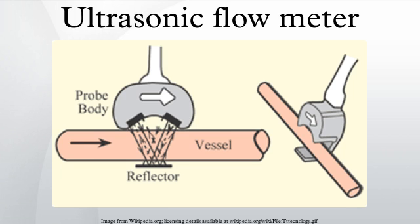Using ultrasonic transducers, the flow meter can measure the average velocity along the path of an emitted beam of ultrasound by averaging the difference in measured transit time between the pulses of ultrasound propagating into and against the direction of the flow, or by measuring the frequency shift from the Doppler effect.